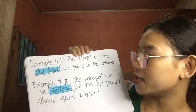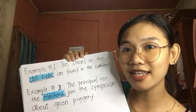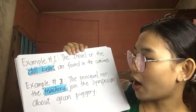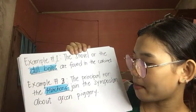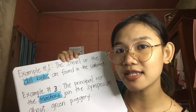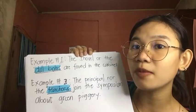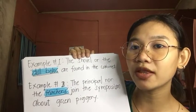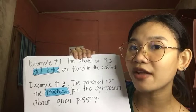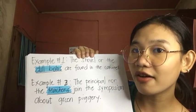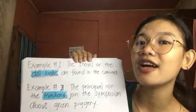Rule number four: when a singular subject is connected by OR or NOR to a plural subject, put the plural subject last and use a plural verb. For example, 'The shovel or the dow bolus are found in the cabinet.' The second example: 'The principal nor teachers join the symposium about the green piggery.' We have plural subjects 'dow bolus' and 'teachers,' placed last with plural verbs 'are' or 'join.'